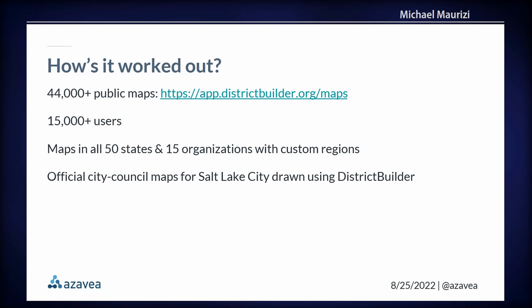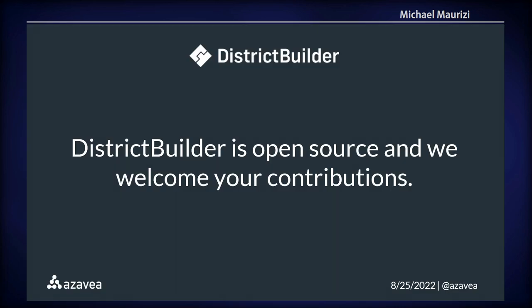So how has it worked out? We have 44,000 public maps that you can view on our community maps page, and 15,000 users in all 50 states. We've had a bunch of custom regions for organizations including political advocacy groups and municipalities — including Salt Lake City's official new legislative districts for city council being drawn using District Builder. And District Builder is open source, so feel free to check out our GitHub.